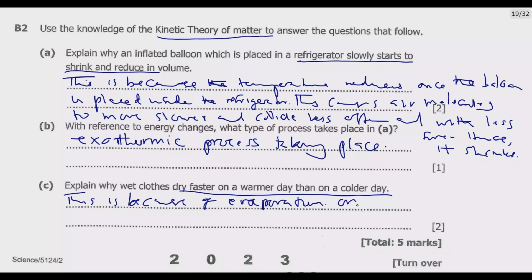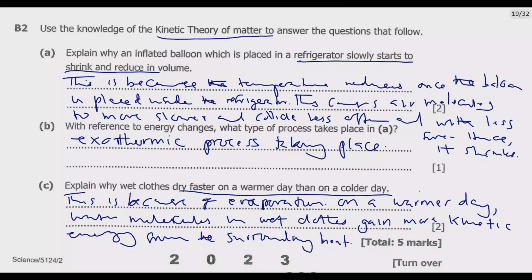So how do we put it now in writing, what I've just explained to you? You can start with: This is because of evaporation. On a warmer day, water molecules in wet clothes gain more kinetic energy from the surroundings, and then the clothes will dry faster on a warmer day than on a colder day.